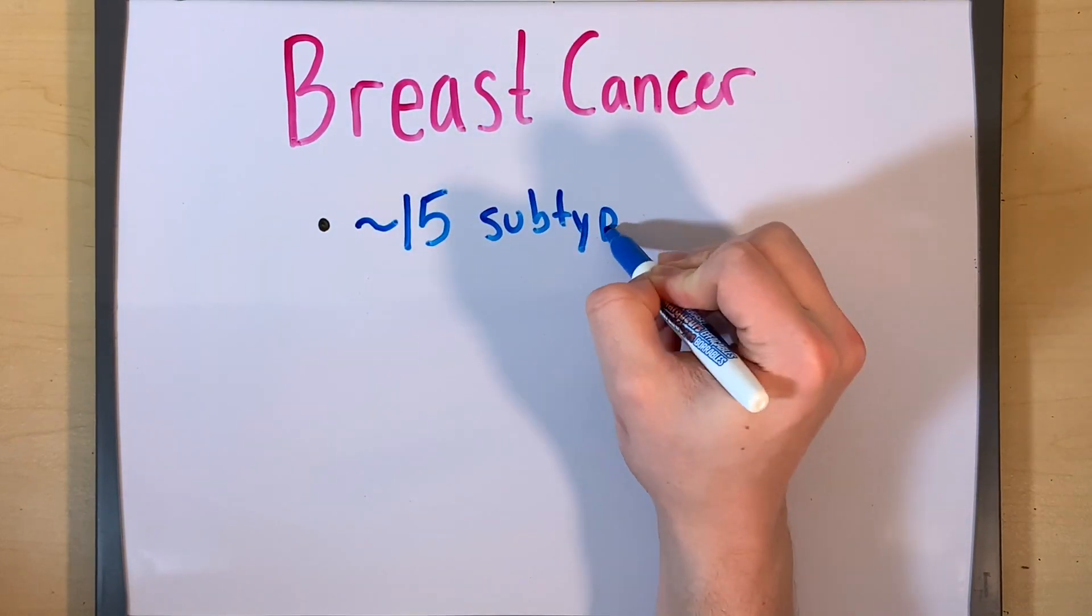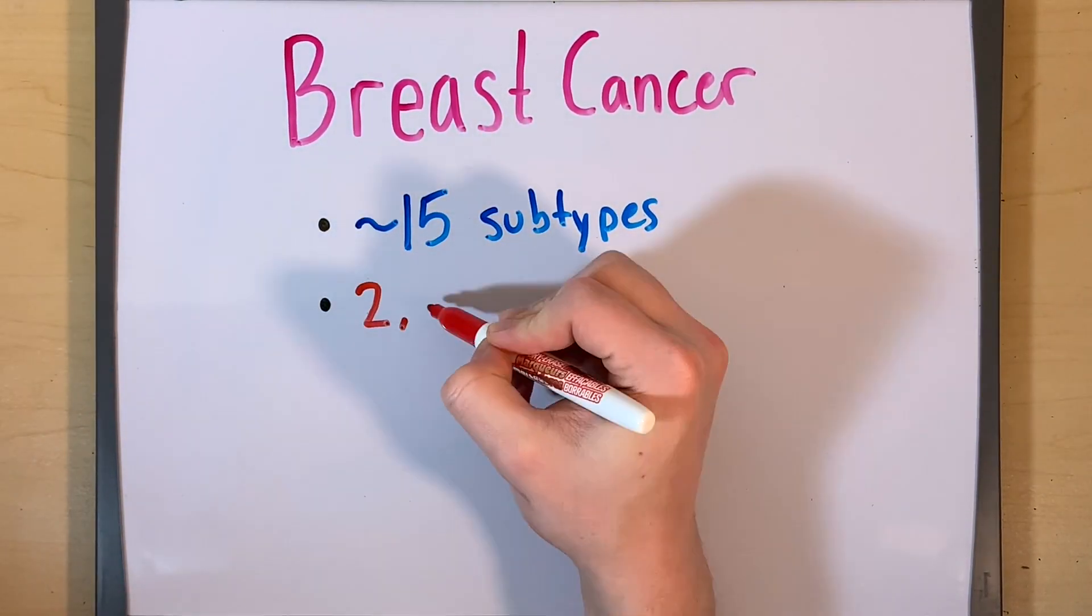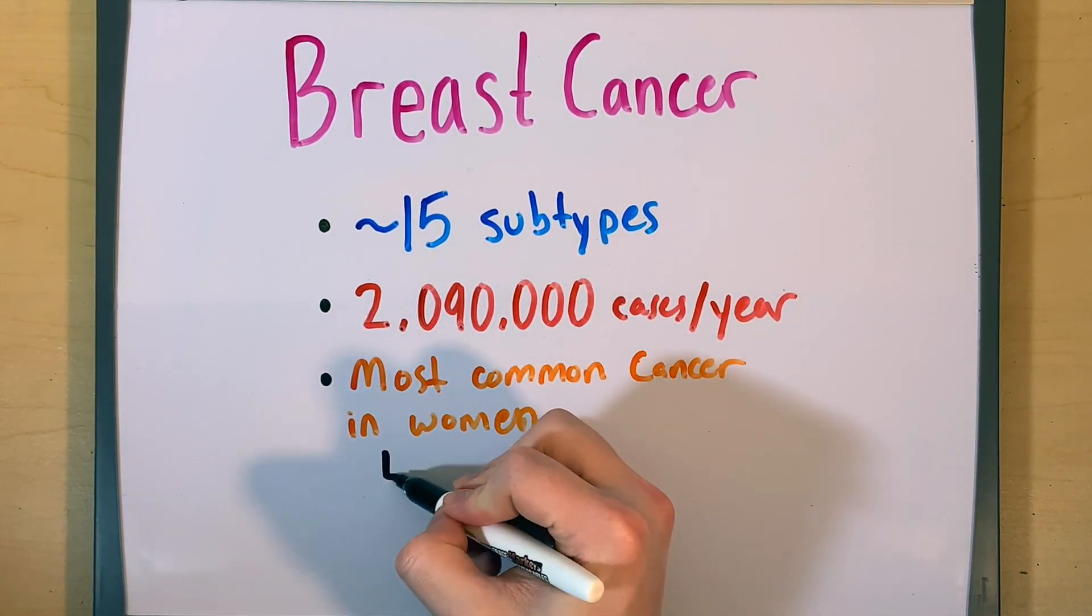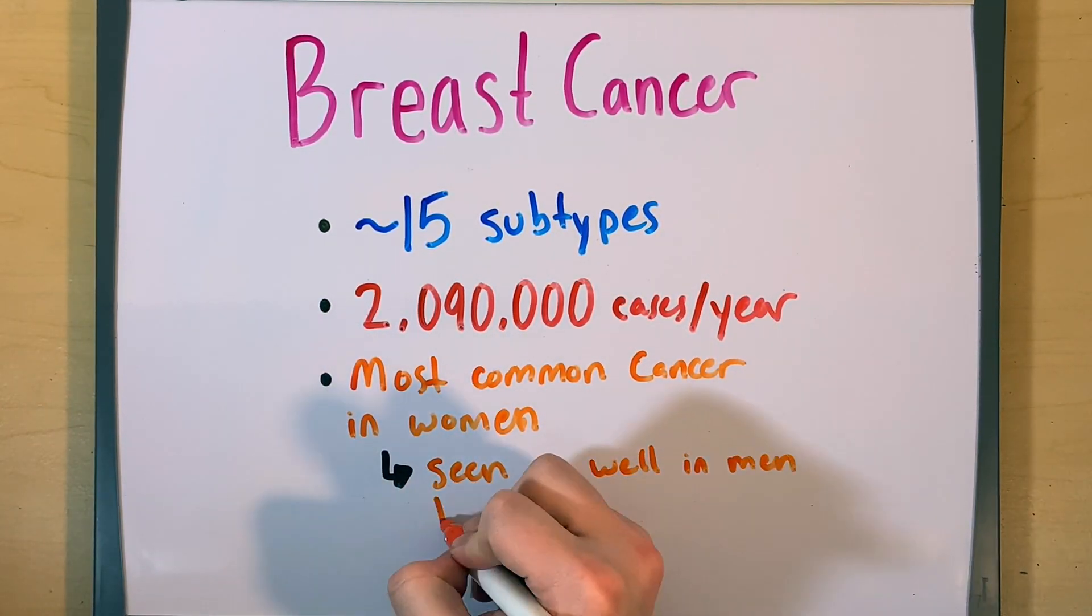Breast cancer has approximately 15 subtypes and presents with 2.09 million new cases every year. It is the most common cancer in women, and additionally it is seen in men, but to a lesser extent.